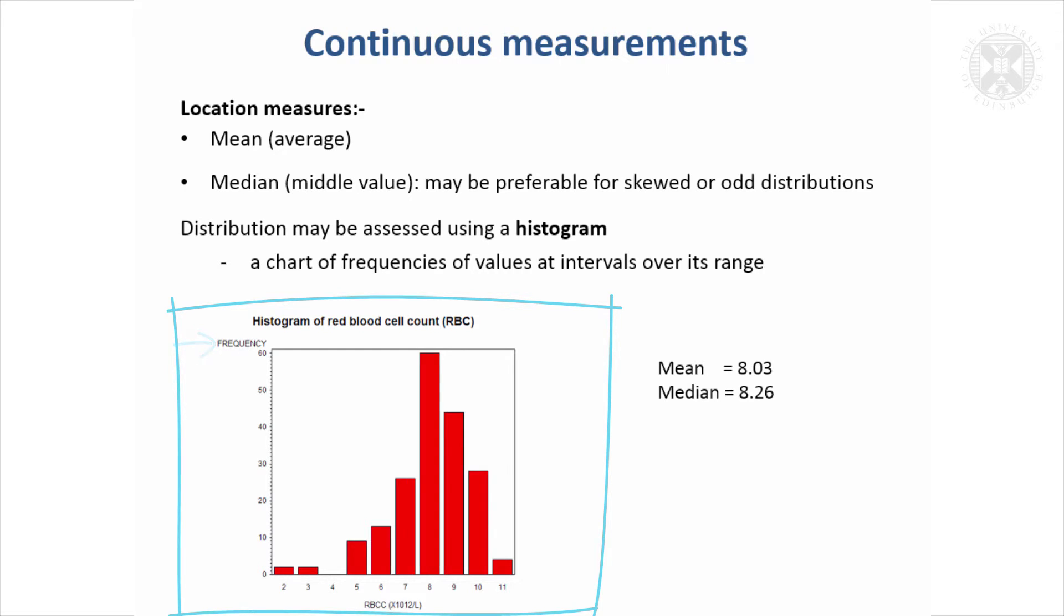Red blood cell count is measured here. It runs from about just under two up to eleven, and there are about two values that have a value of two, two have a value of three, none have a value of four, and so on. The majority have got a value of eight, so it gives a visual impression of how the data are distributed.